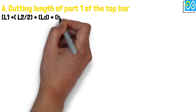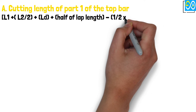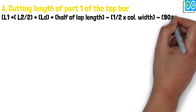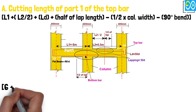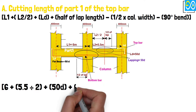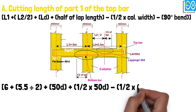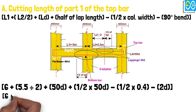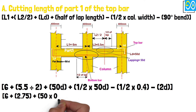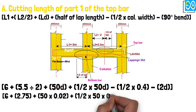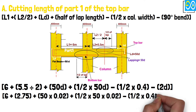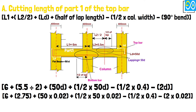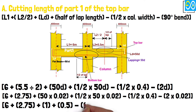Cutting length of Part 1 of the top bar equals L1 plus L2 divided by 2 plus Ld plus half of lap length minus half times column width minus 90-degree bend. Equals 6 plus 2.75 plus 50 times 0.02 plus half times 50 times 0.02 minus half times 0.4 minus 2 times 0.02. Equals 6 plus 2.75 plus 1 plus 0.5 minus 0.2 minus 0.04, equals 10.01 meters.